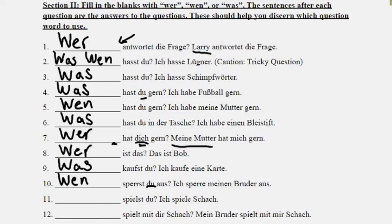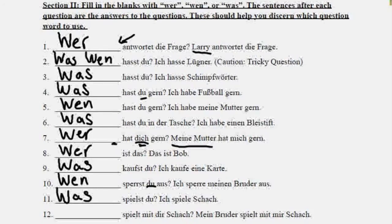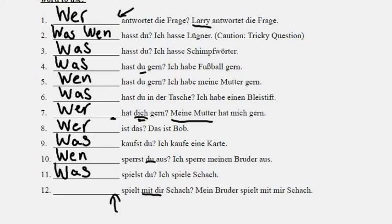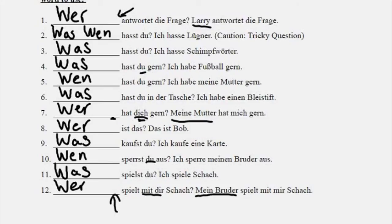Number eleven: blank spielst du? — What are you playing? The answer is Ich spiele Schach — I play chess. We generally don't play people, so we use was. Number twelve: blank spielt mit dir Schach? Mit dir is a prepositional phrase, so the blank must be the subject. The answer is Mein Bruder — my brother, who is playing chess with me. So here we use wer. Wer spielt mit dir Schach? — Who plays chess with you?